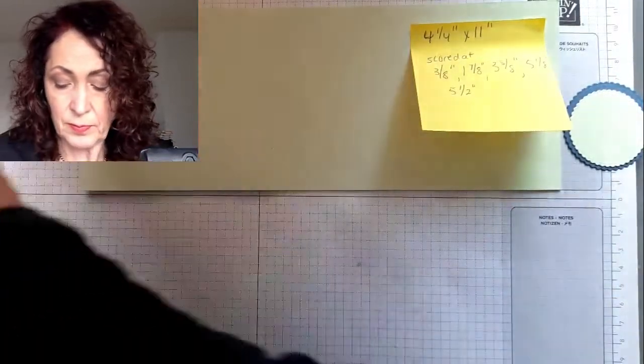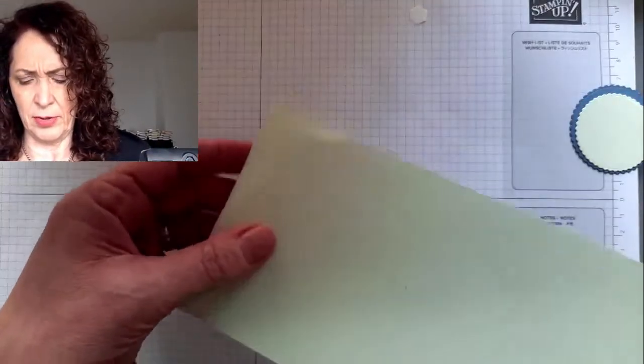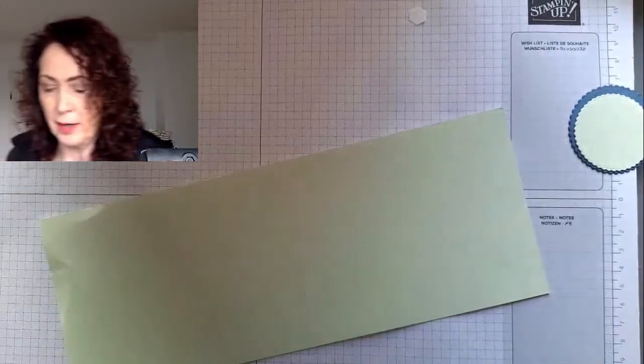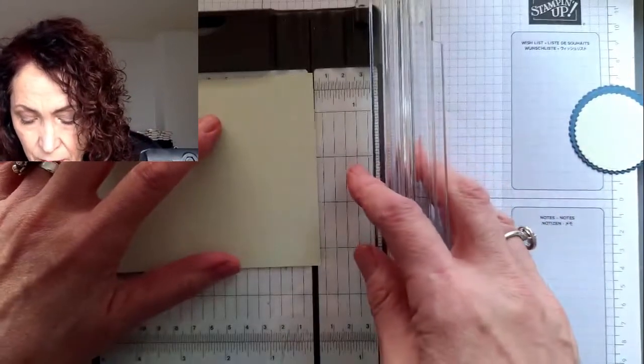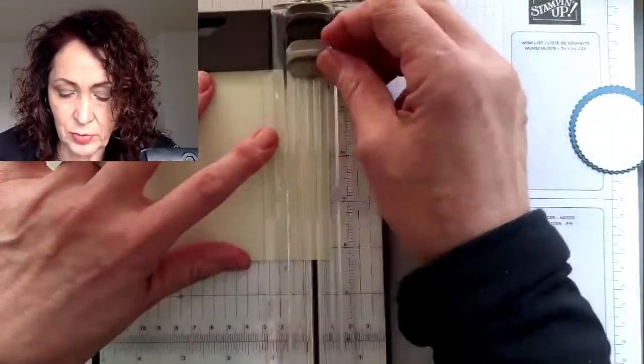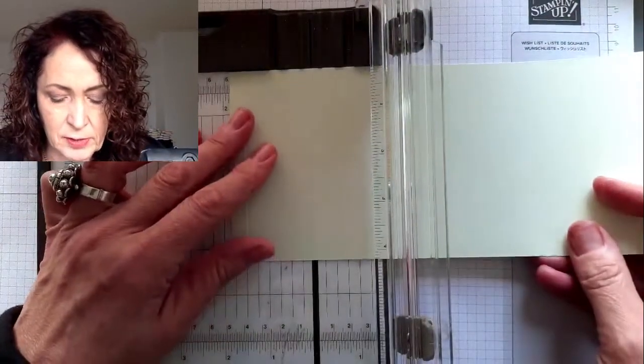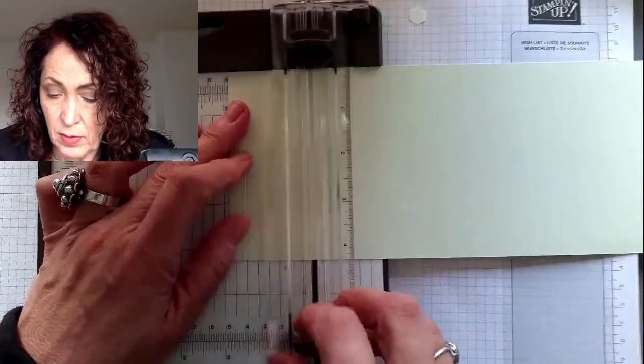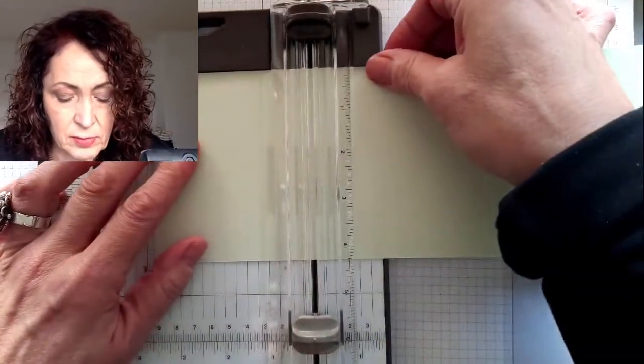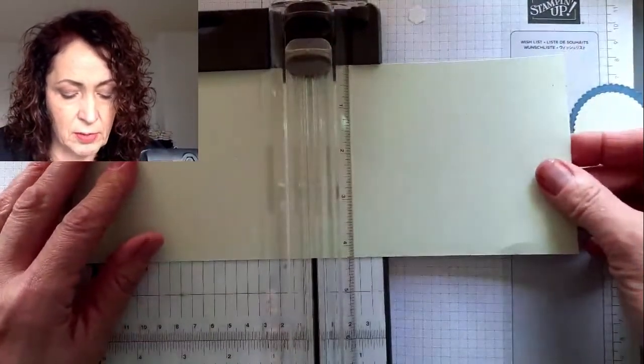Let's do the scoring first. So on this side, I'm going to score at three eighths of an inch, so it's one eighth, two eighths, three eighths, like so. So then we're going to use the gray blade, three eighths of an inch, and then I'm going to flip it the other way. We're going to one and seven eighths, three and five eighths, five and one eighth, and five and a half, which is the halfway mark of the card.